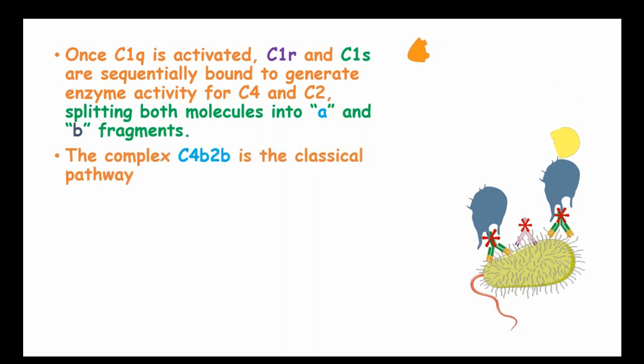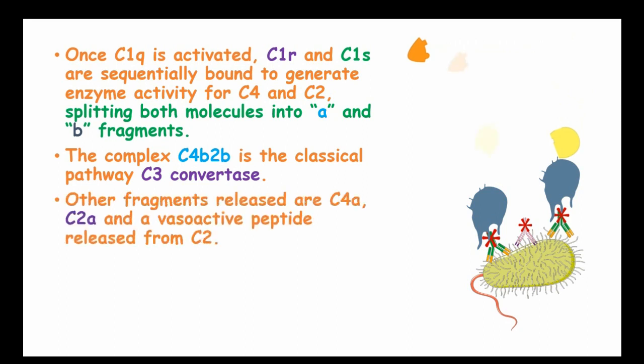This complex C4B and C2B is the classical pathway's C3 convertase. Other fragments released are C4A and C2A, which are released into circulation. Vasoactive peptide, which is released from C2, is known as C2A.